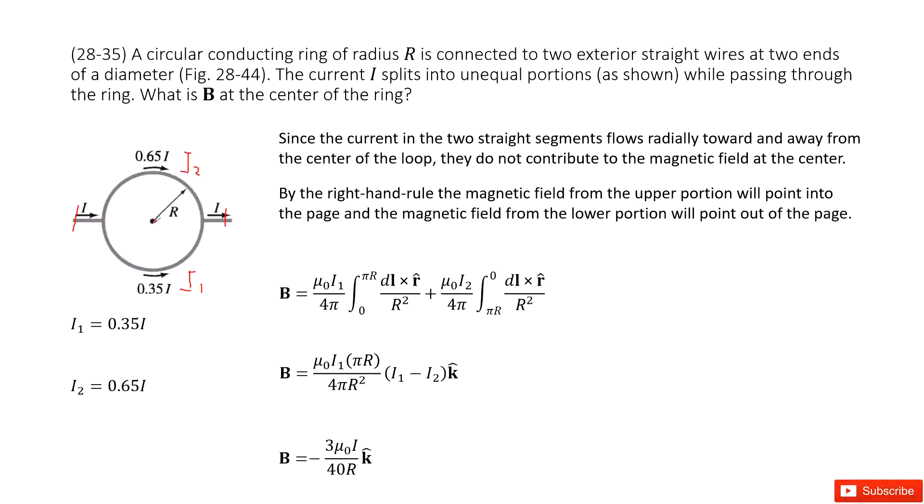We just need to consider the magnetic fields from the bottom half ring and upper half ring. So how can we do that? Consider Biot-Savart law. So first of all, we consider the lower part, the bottom part.